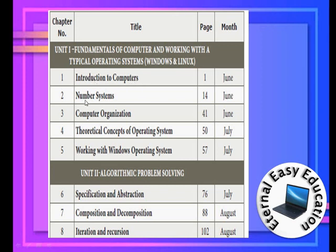Chapter 2 is Number System. This chapter is somewhat related to maths, but not the kind of maths you've studied before. Don't think 'I don't like maths.' Number System is a very easy chapter as well as a scoring chapter. If you learn this chapter, you are surely going to get five marks.